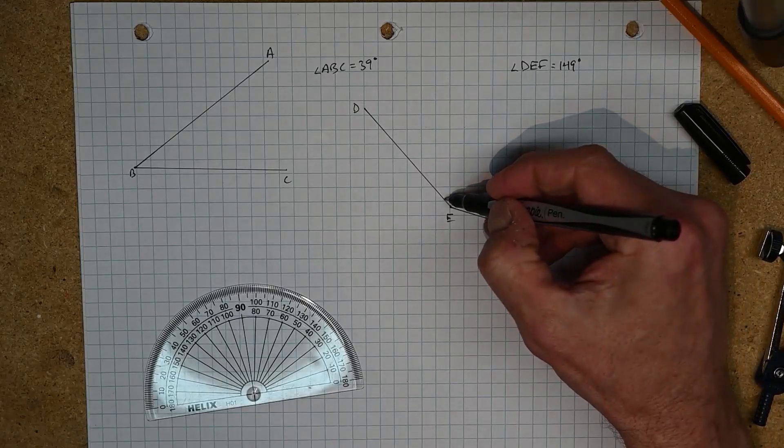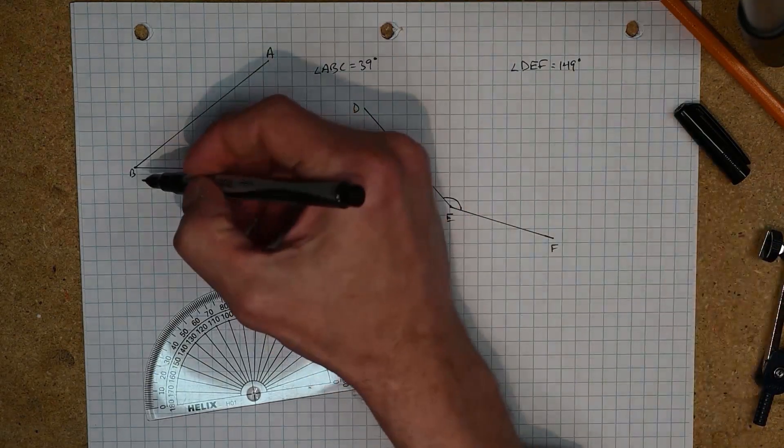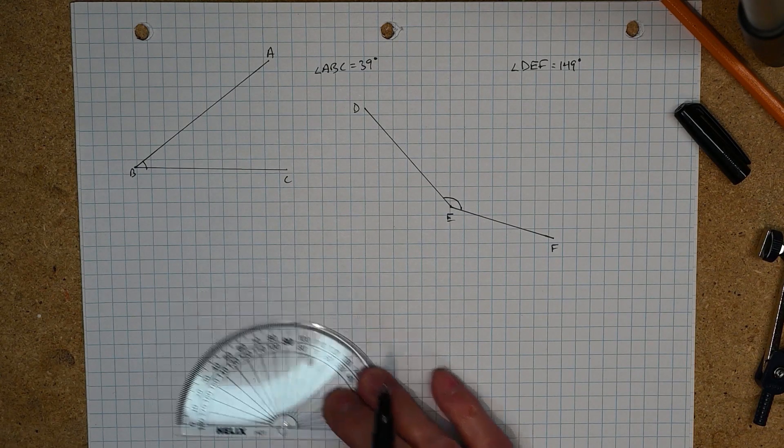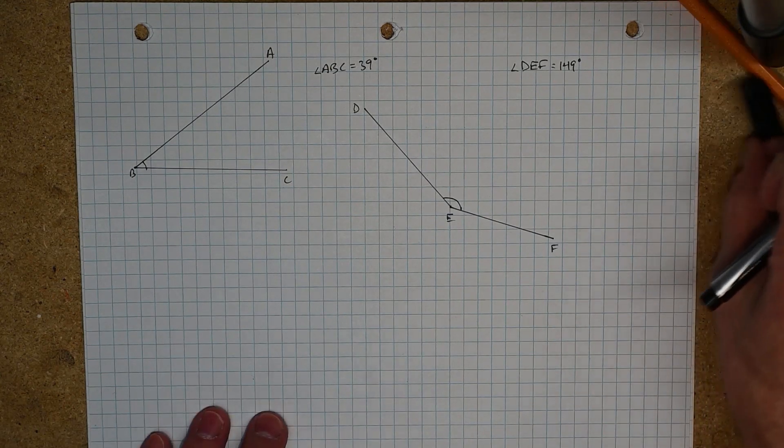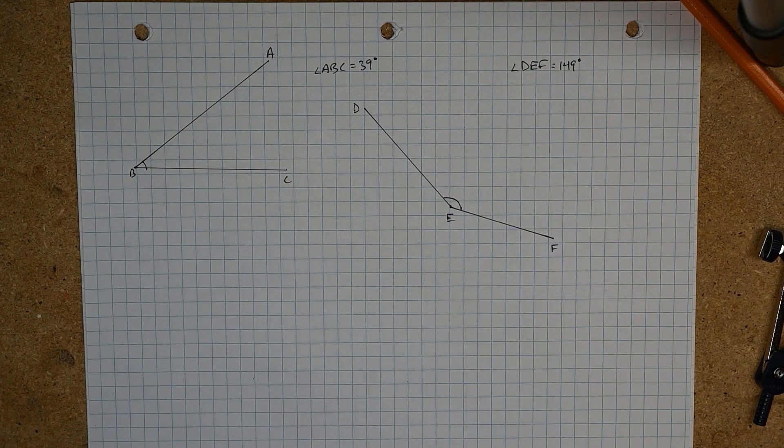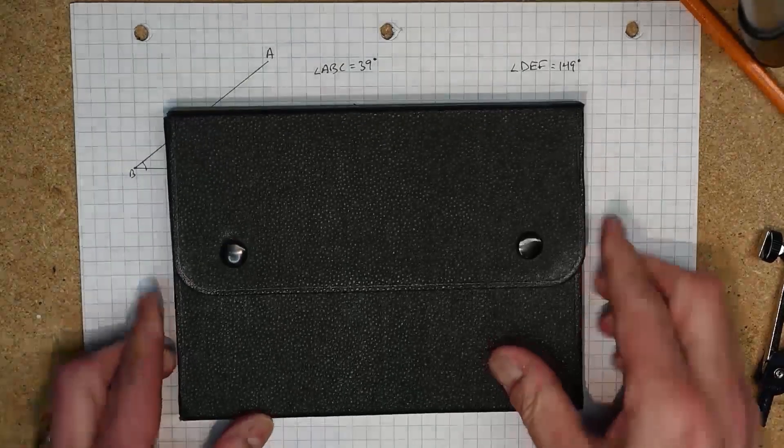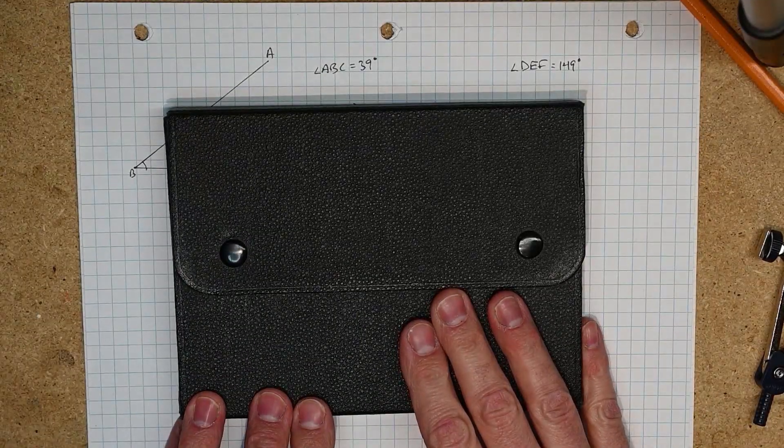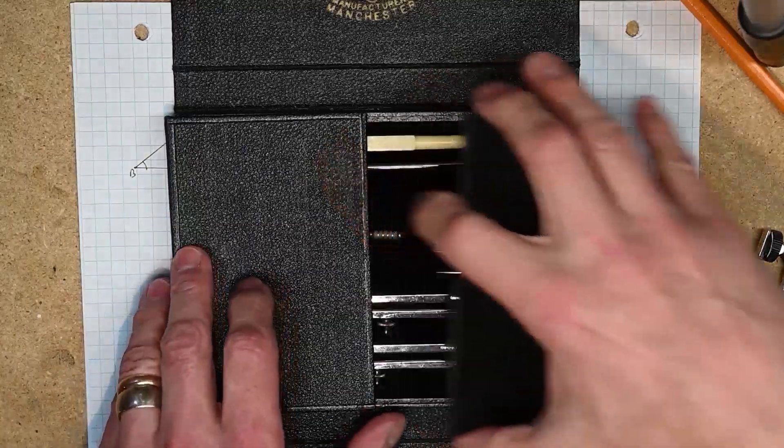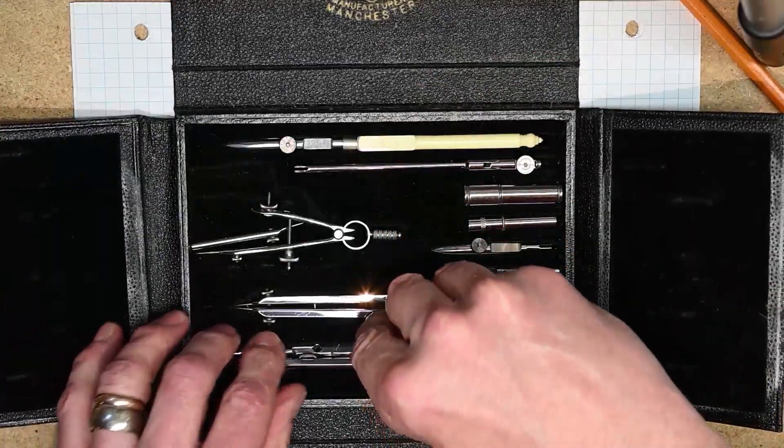So that's the measure of this obtuse angle as opposed to this acute angle. That's measuring angles. Now another skill that we need is the ability to draw a triangle using a compass. This is my father's old engineering set that he used many years ago. My father was actually a physician but he did do some engineering work as well.